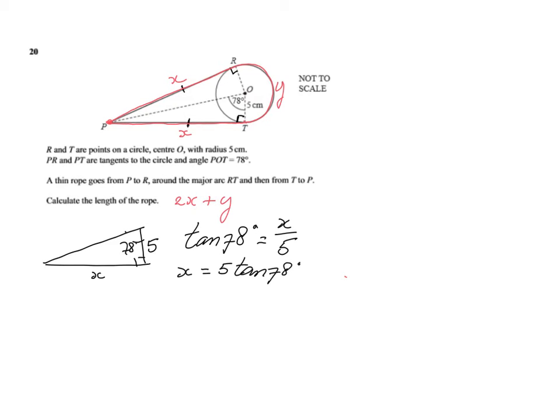Now I can work that out already, but I'm going to get a lot of decimals and I try to avoid that. So at this stage I'm just going to leave it like that. I'm going to say 2X is 2 times 5 tangent of 78 degrees, plus I've still got to find out what Y is.